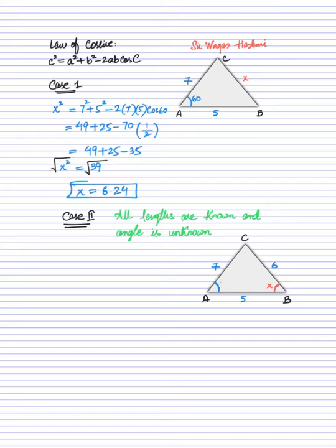First, we pick the angle. The angle in this case is cos X, so I will write cos X on the left side of the equals sign. On the right side, I place the side that is opposite to that angle, which is 7. So I will write 7 squared, since we write all the terms in squared form. The remaining two sides are 6 and 5.